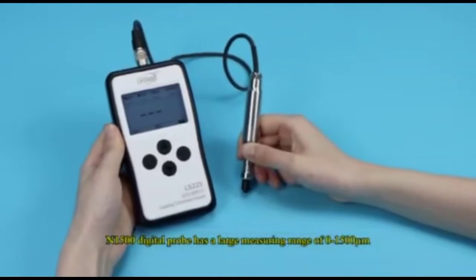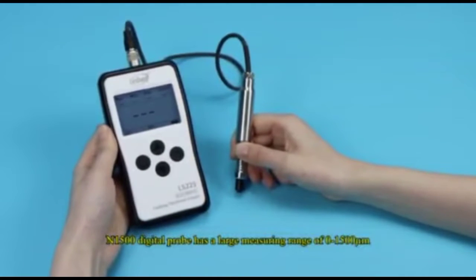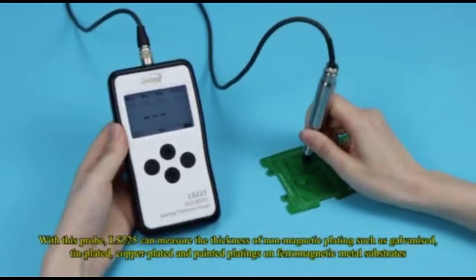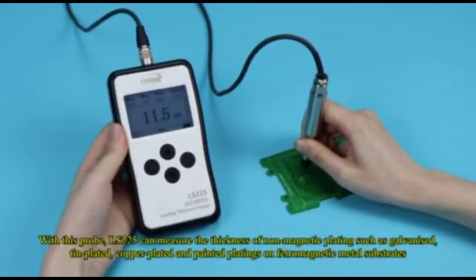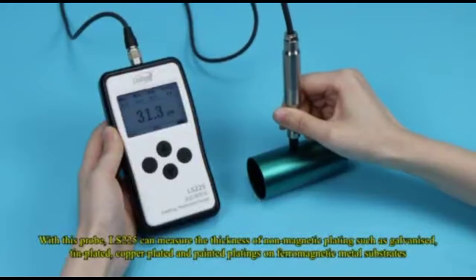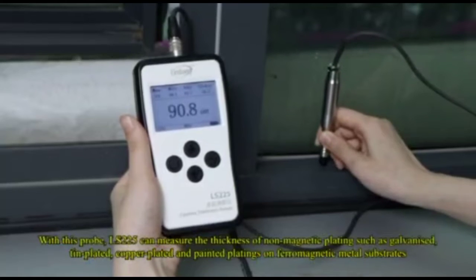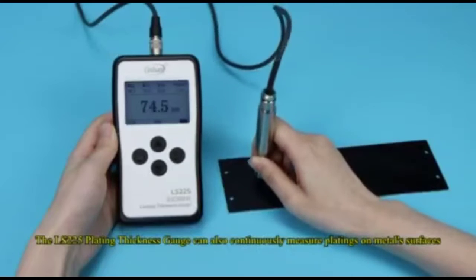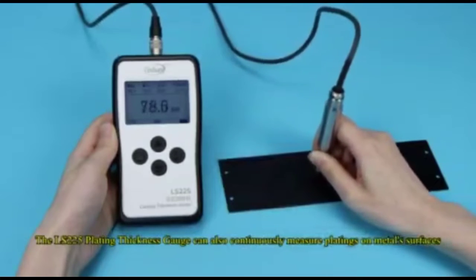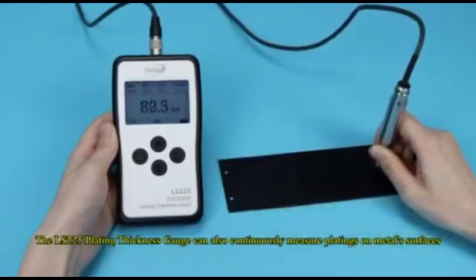N1500 digital probe has a large measuring range of 0 to 1500 micrometers. With this probe, LS-225 can measure the thickness of non-magnetic platings such as galvanized, tin-plated, copper-plated and painted platings on ferromagnetic metal substrates. The LS-225 plating thickness gauge can also continuously measure platings on metal surfaces.